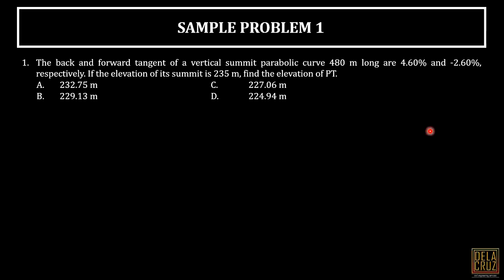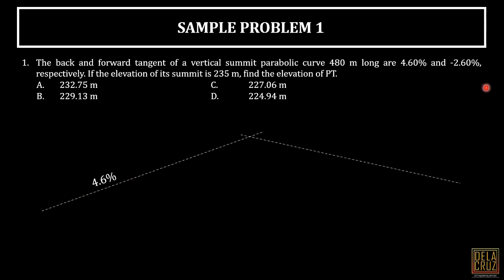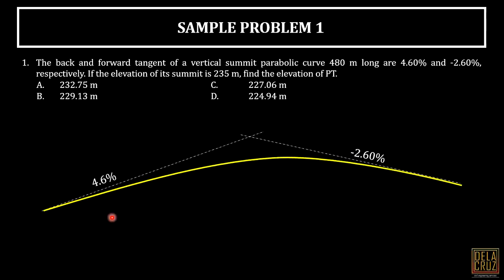So how do we do this? First, let's draw the curve and understand its properties. We have a back tangent of 4.6% — since that is positive, it will be going up. The forward tangent is negative 2.6%, so from the point of intersection it goes down. They connect through a curve. PC is the point of curvature — the point where the roadway starts to curve.